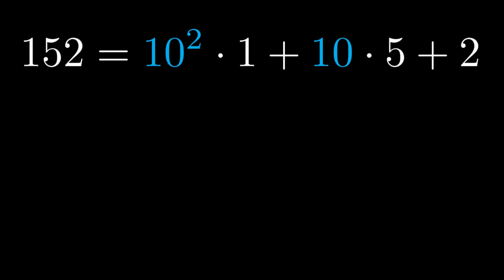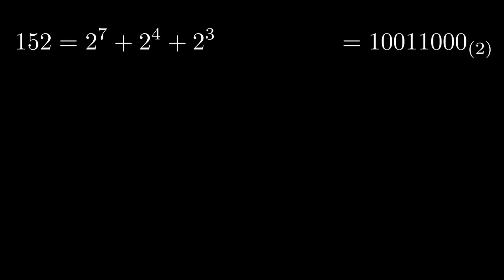Consider the number 152. We write it down as 1 followed by a 5 and then a 2, precisely because in base 10, 152 is 100, 5 tens, and 2 ones. We can similarly expand 152 in a different base, such as base 2.